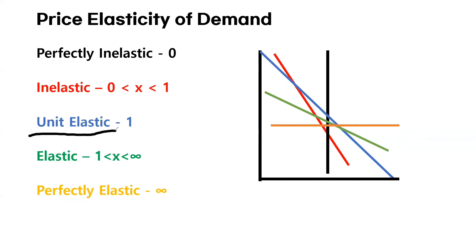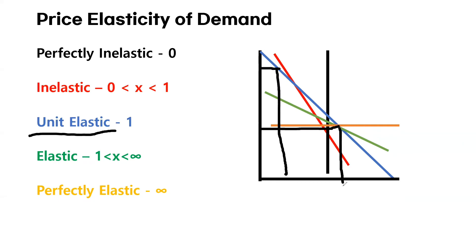The third type is unit elastic, and we say a certain demand is unit elastic if the calculated elasticity is one. You can see this blue line — if the price changes a certain percentage, it is likely that the quantity will also change by the same percentage.